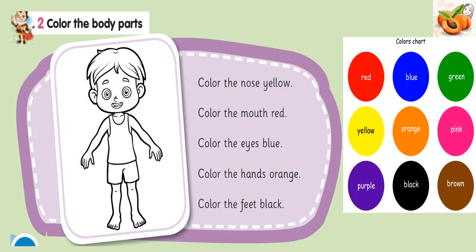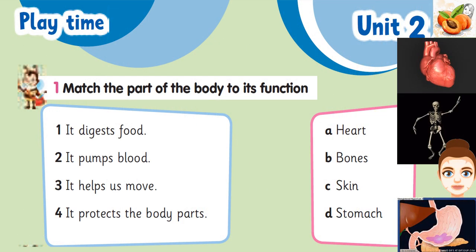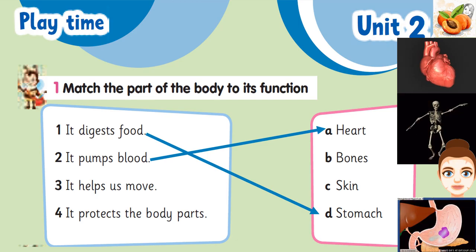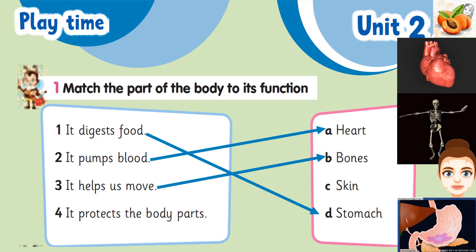Color the body parts. Color the nose yellow. Color the mouth red. Color the eyes blue. Color the hands orange. Color the feet black. Now match the part of the body to its function. 1. It digests food — Stomach. 2. It pumps blood — Heart. 3. It helps us move — Bones. 4. It protects the body — Skin.